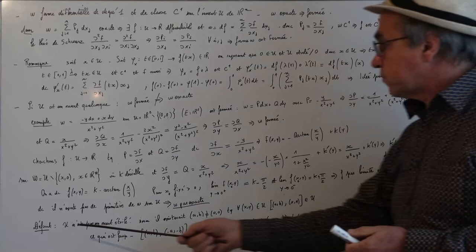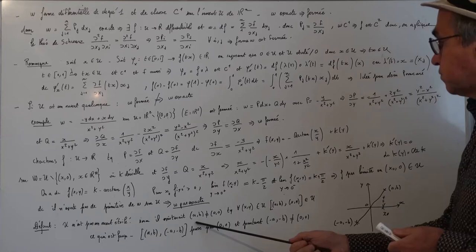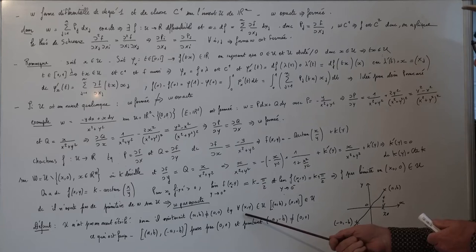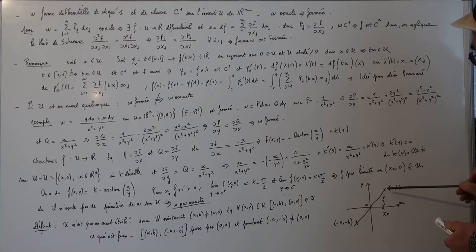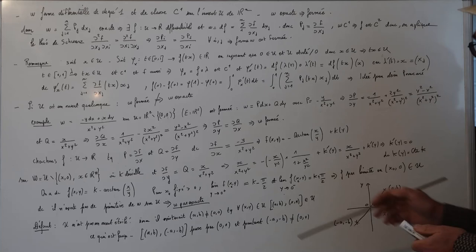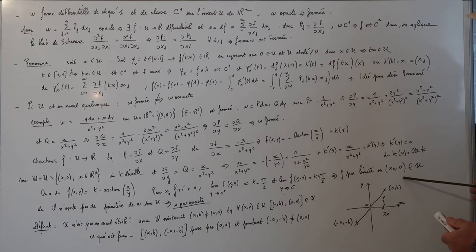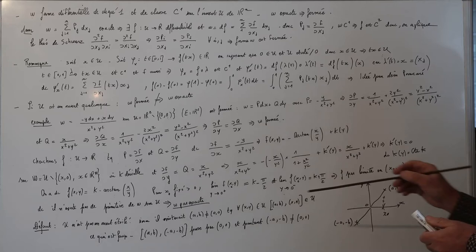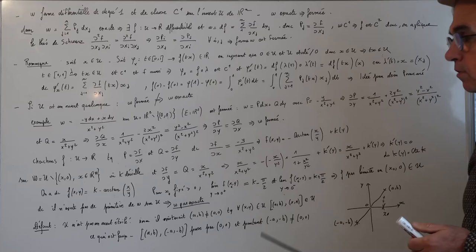Le défaut vient du fait que U n'est pas un ouvert étoilé, sinon il existerait (a,b) ≠ (0,0) tel que quel que soit (x,y) appartenant à U, le segment [ab, xy] appartiendrait à U. C'est évidemment faux, car si on prend le point diamétralement opposé par rapport à 0, ce segment passe par 0. Si à la place on avait pris un ouvert étoilé, par exemple une boule ouverte dans le premier cadran, alors ω aurait bien une primitive et serait exacte.